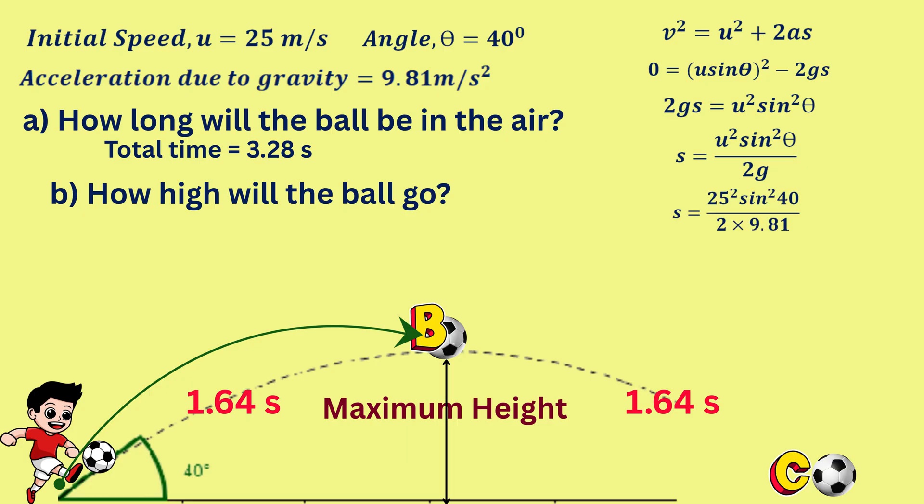u is 25, theta is 40 and g is 9.81. Hence, we get s equals 13.17.